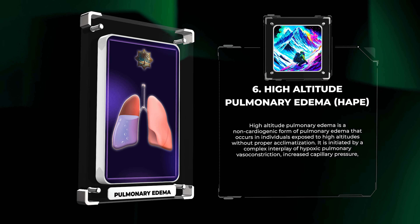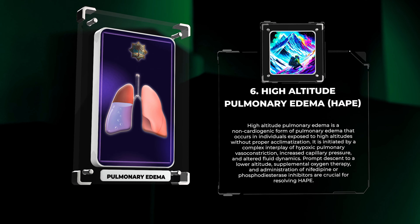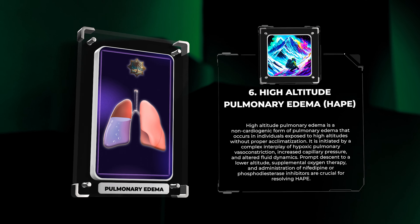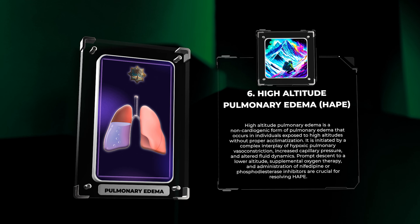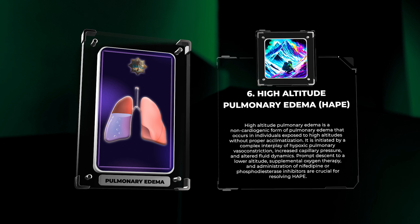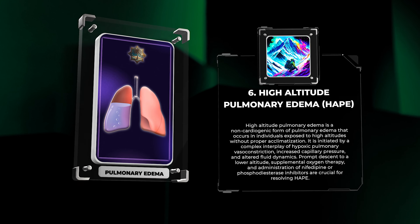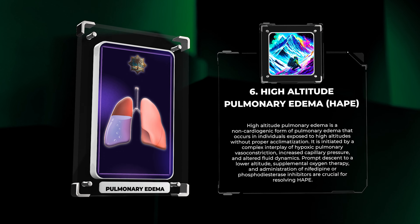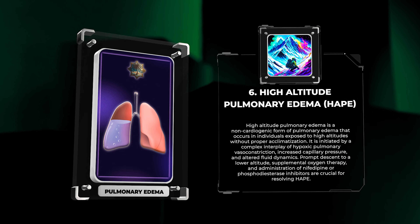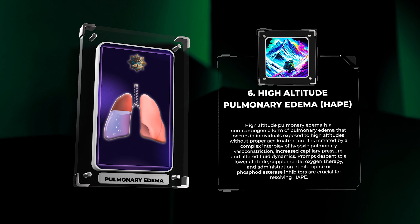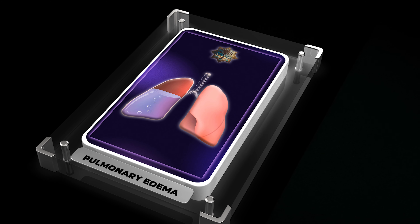High altitude pulmonary edema (HAPE) is a non-cardiogenic form that occurs in individuals exposed to high altitudes without proper acclimatization. It is initiated by a complex interplay of hypoxic pulmonary vasoconstriction, increased capillary pressure, and altered fluid dynamics. Prompt descent to a lower altitude, supplemental oxygen therapy, and administration of nifedipine or phosphodiesterase inhibitors are crucial for resolving HAPE.